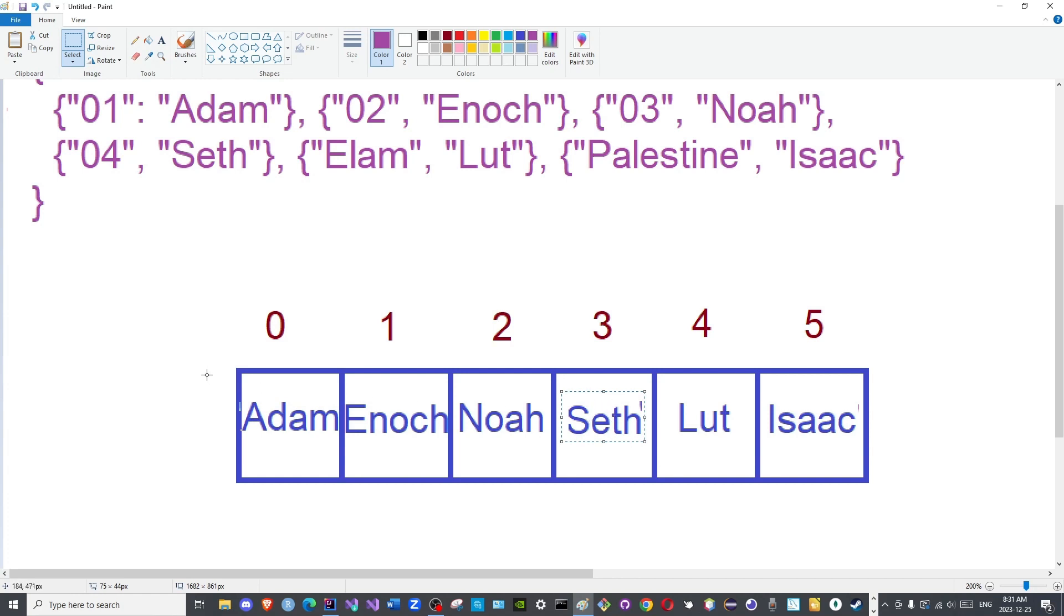Instead of iterating through the entire array and writing an if statement, if name dot equals Seth, perform certain logic, we can search for the name through its associated label. If we search through the label, if we search for the label, we will be able to retrieve its associated value or element easily.